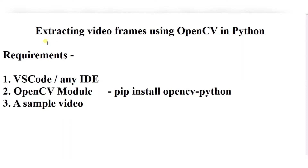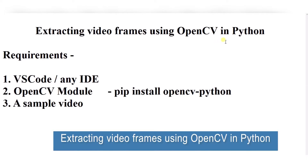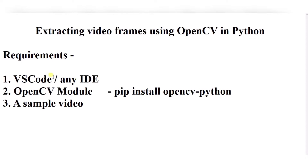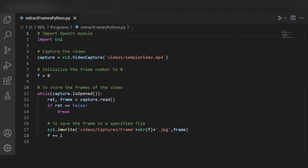Hello everyone, welcome to my project ideas channel. Today we'll see how to extract video frames using the OpenCV module in Python. For this, you need a VS Code editor or any IDE of your choice. The second requirement is the OpenCV module — to install it, simply write 'pip install opencv-python' in your command prompt and press Enter. The third requirement is a sample video.